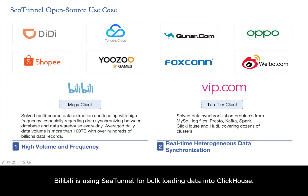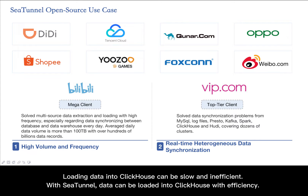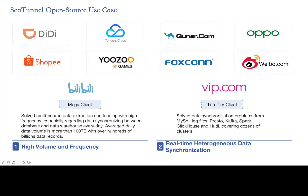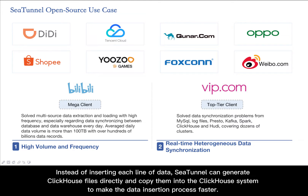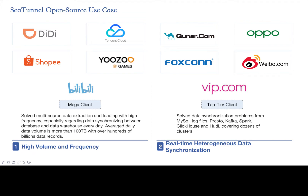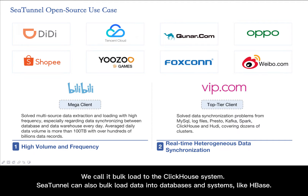C-Tunnel is used for bulk loading data into ClickHouse. Loading data into ClickHouse can be slow and inefficient, but with C-Tunnel, data can be loaded efficiently. Instead of inserting each line of data, C-Tunnel can generate ClickHouse files directly and copy them into the ClickHouse system, making the data insertion process faster. We call this bulk load to the ClickHouse system.